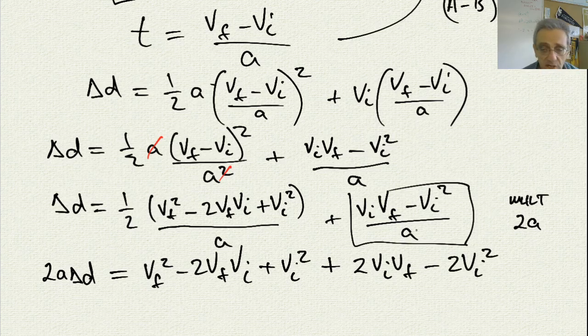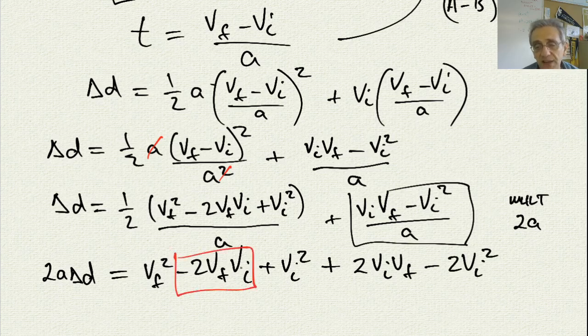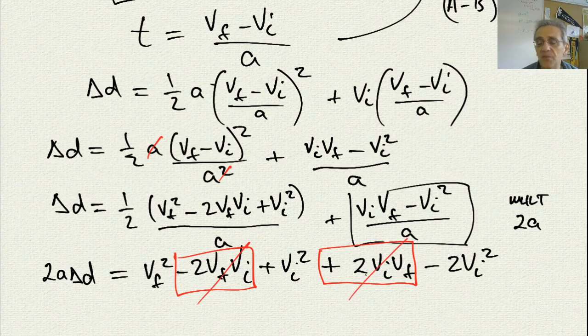Now I'll change colors again. And if you'll notice, I have minus 2v-f-vi, and I have positive 2v-f-vi here. So these two guys cancel out. Remember, multiplication order doesn't matter. These are the same terms. V-final times v-initial.